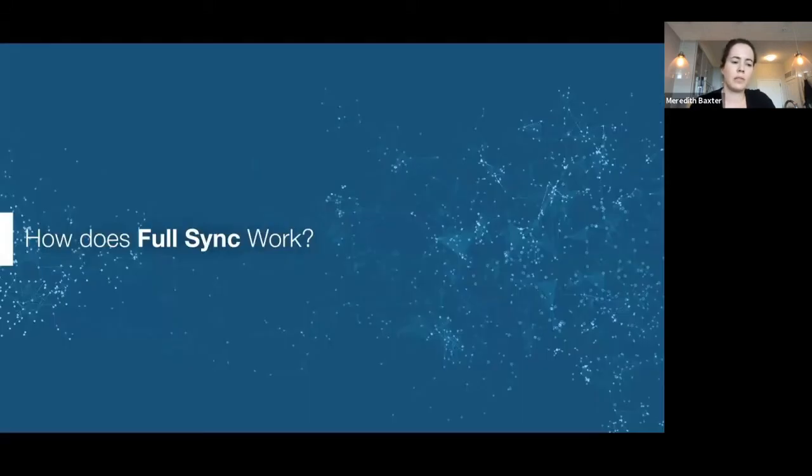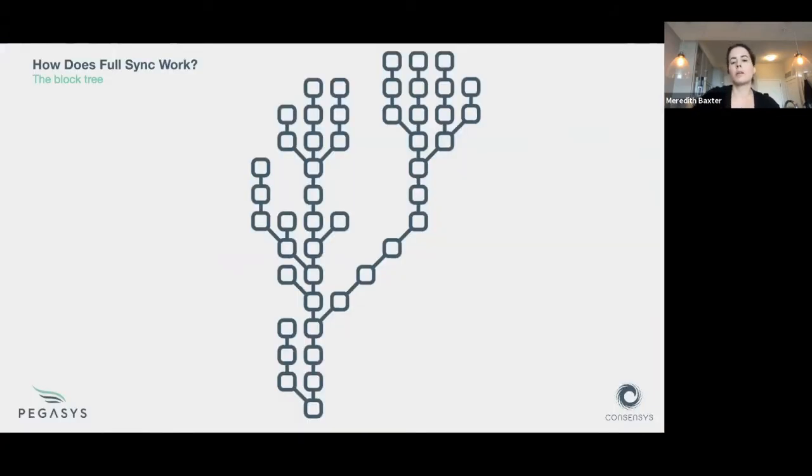I'm just going to give an overview of full sync first and then we can compare and contrast with fast sync. The first thing to recognize when you're thinking about the environment that the synchronizer is working in, we talk about blockchains, but really in terms of what the synchronizer sees, there's kind of a block tree. That means you've got canonical blocks out there, but you also have forks and non-canonical blocks, and you have to deal with all that chaos.